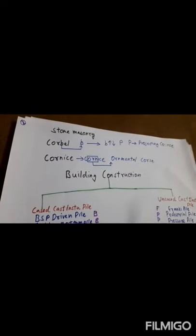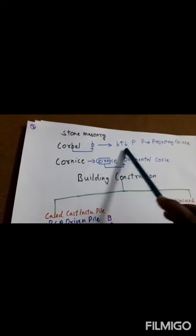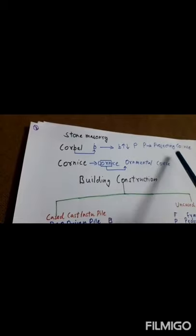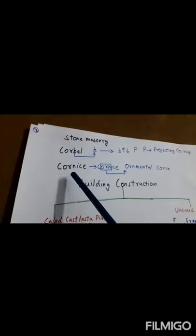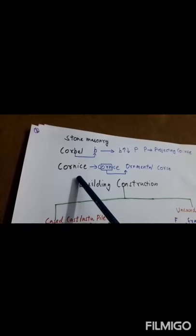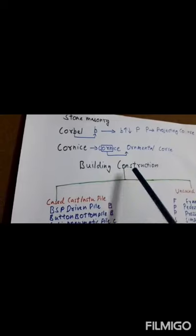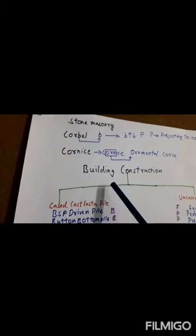The corbels are upside down. This P is a projecting course. The corbels form an ornamental course.